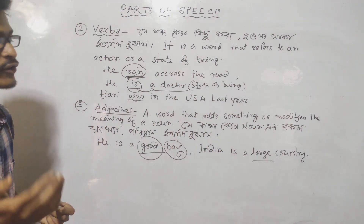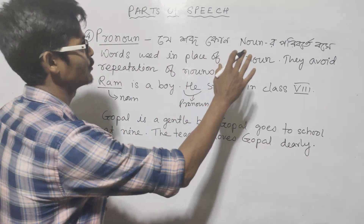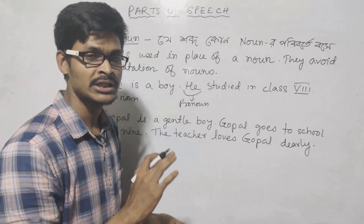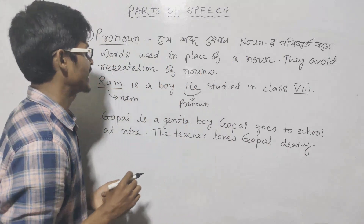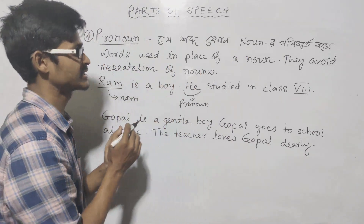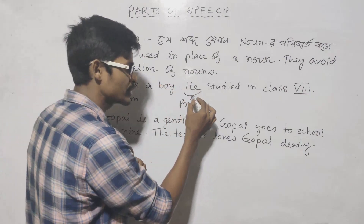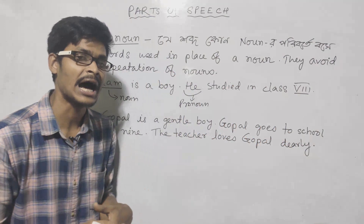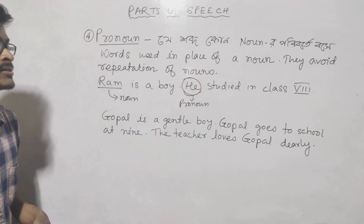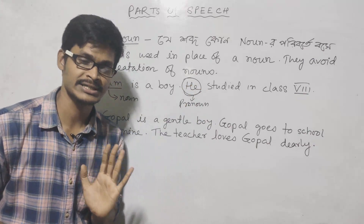Next is the pronoun. A pronoun is a word that is used in place of a noun. Pronouns avoid repetition of a noun. For example, 'Ram studied in class 8' — instead of repeating Ram, we say 'he studied in class 8.' So 'he' is a pronoun used in place of the noun Ram.